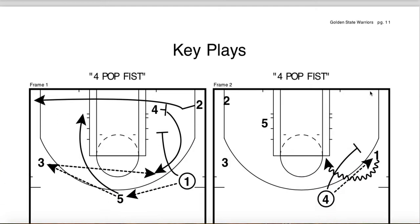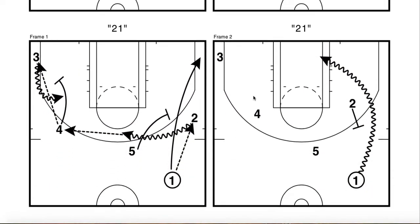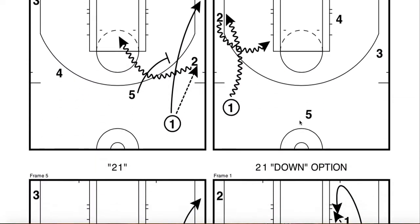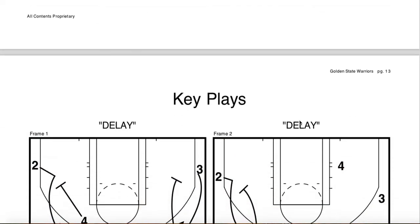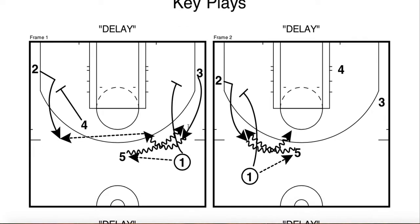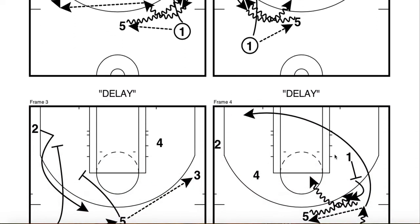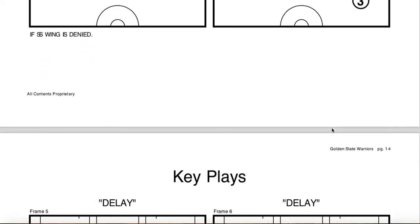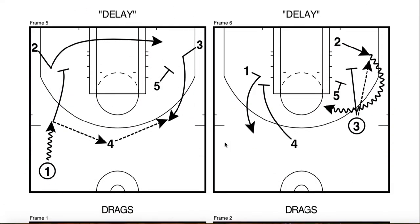Now we get to the diagrams — the fun part. Key plays: 21, pistol action, really commonplace in today's NBA. Delay — super common still. The Warriors really kind of originated it with Draymond at the five spot. You see a ton of it now with Jokic — playing through the big, playing split game on both sides. Pin downs, back picks, a whole bunch of options detailed out of it. There's a whole bunch of random things they could do.